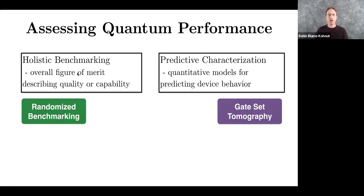So most of the protocols that have been developed for characterizing quantum computers fall more or less into one of these two buckets: either predictive characterization that produces quantitative models for device behavior, or holistic benchmarking that's designed to give you an overall figure of merit describing how good or how capable this device is. The exemplars for these categories are gate-set tomography, which is the prototypical predictive characterization protocol, and randomized benchmarking, which sort of twirls all of the errors up into a single figure of merit.